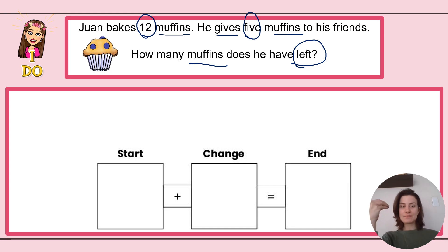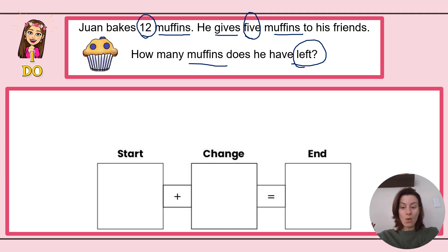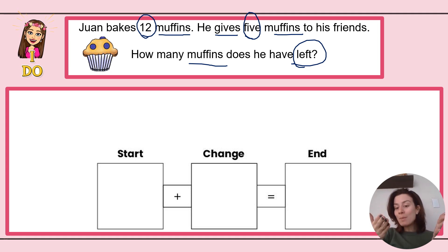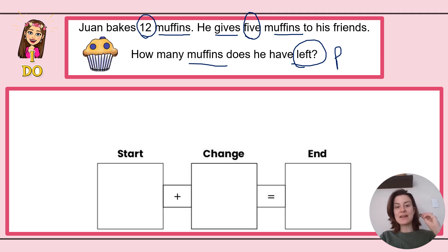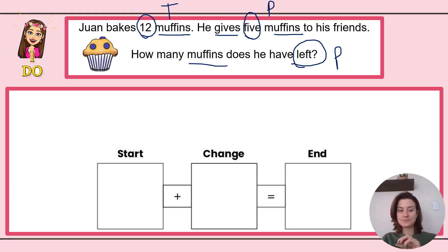Let's imagine this out. Juan bakes 12 muffins — I have my 12 muffins. He gives five muffins away, so he doesn't have those five muffins anymore. He gives them to his friends. How many are left means I'm not going to add here — I'm going to subtract, because I'm taking away five muffins from 12 and wondering what's the missing part left over. My total is 12, one of my parts is five, and I'm missing the other part. So I need to subtract to find my answer. Step 1 is complete.